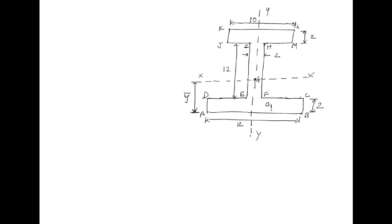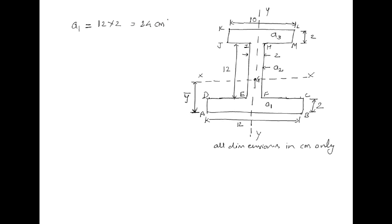The area of the first rectangle is a1, the area of the second rectangle is a2, and the area of the third rectangle is a3. All dimensions are in centimetres only. So a1 will be 12 into 2 equal to 24 cm². For the third rectangle, we have dimensions 10 and 2, so the area of the third rectangle will be 10 into 2 equal to 20 cm².